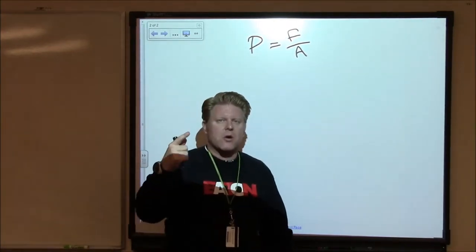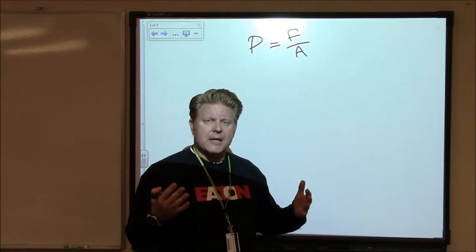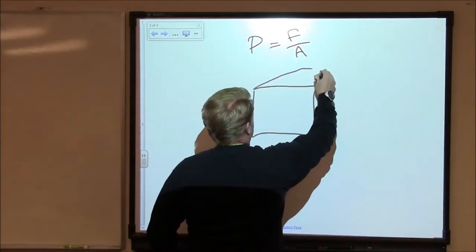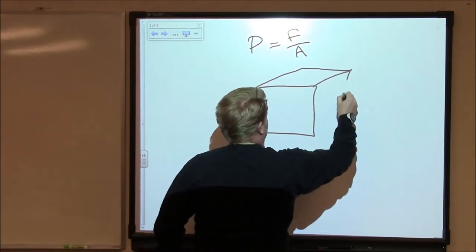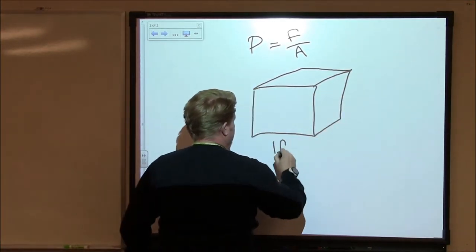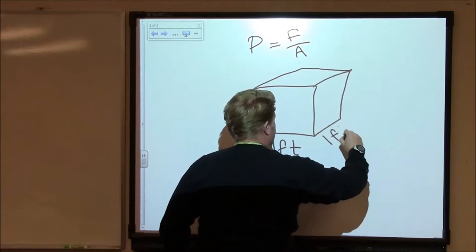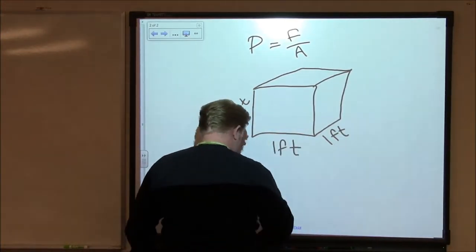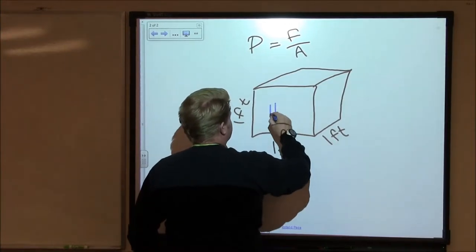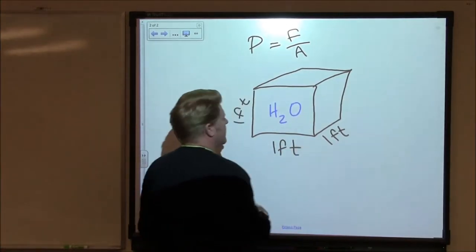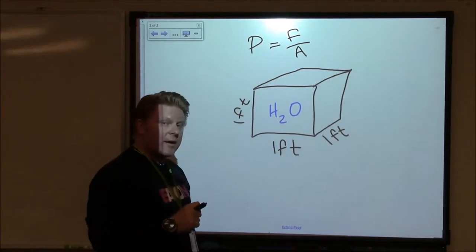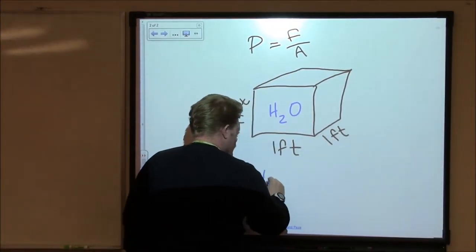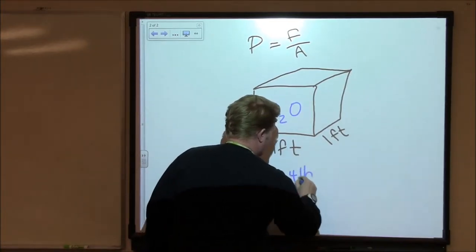Now I mentioned a moment ago it's a fluid inside of a container, so let's draw a container. If we have some box that's one foot wide by one foot deep by one foot tall, and if we fill it to the very top with water, H2O, we find, if we were to put it on a scale, that the weight of this box would be 62.4 pounds.